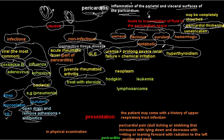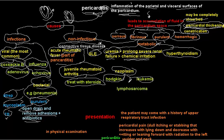Hyperthyroidism is also a metabolic cause. Additionally, neoplasms in the surrounding area — such as the lung and mediastinum — may lead to pericarditis, for example lymphoma, leukemia, and lymphosarcoma. Trauma is also a possible cause of pericarditis.